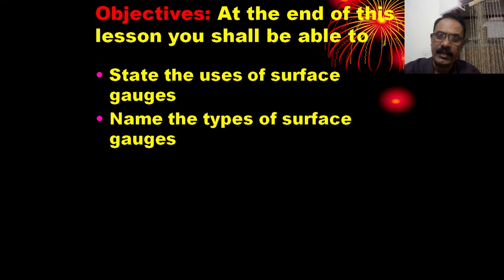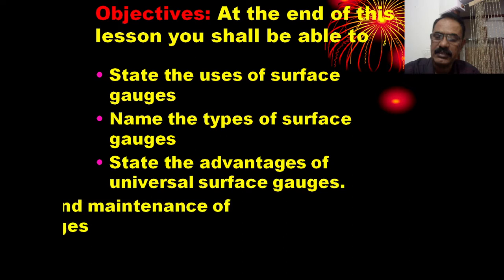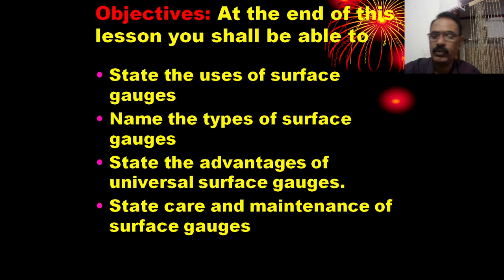The types of surface gauge are: universal surface gauge and fixed surface gauge. You should also be able to state the advantages of universal surface gauges and state the care and maintenance of surface gauges.